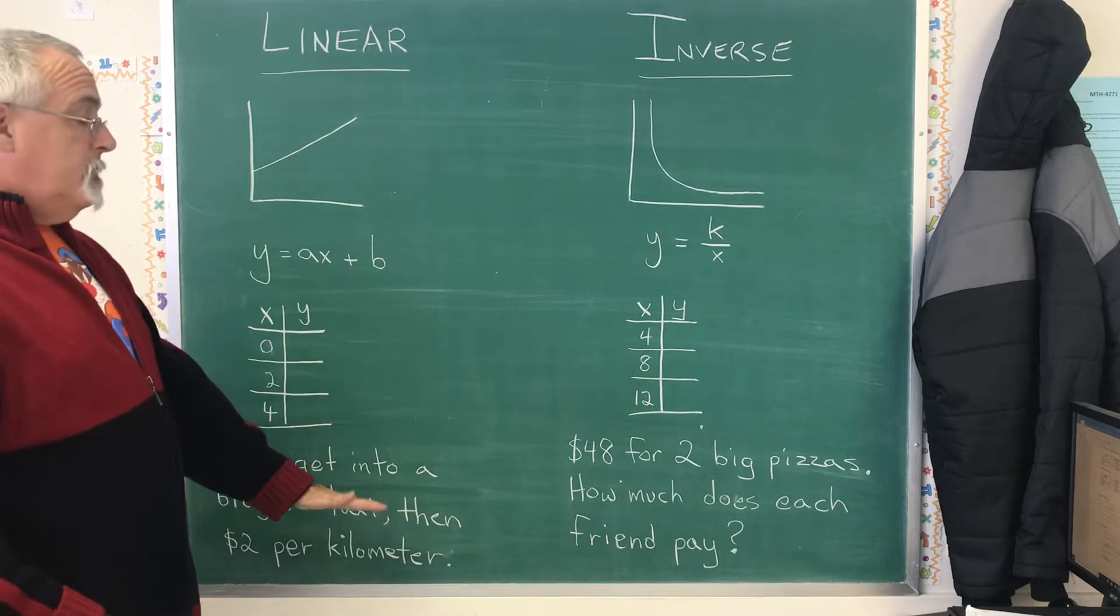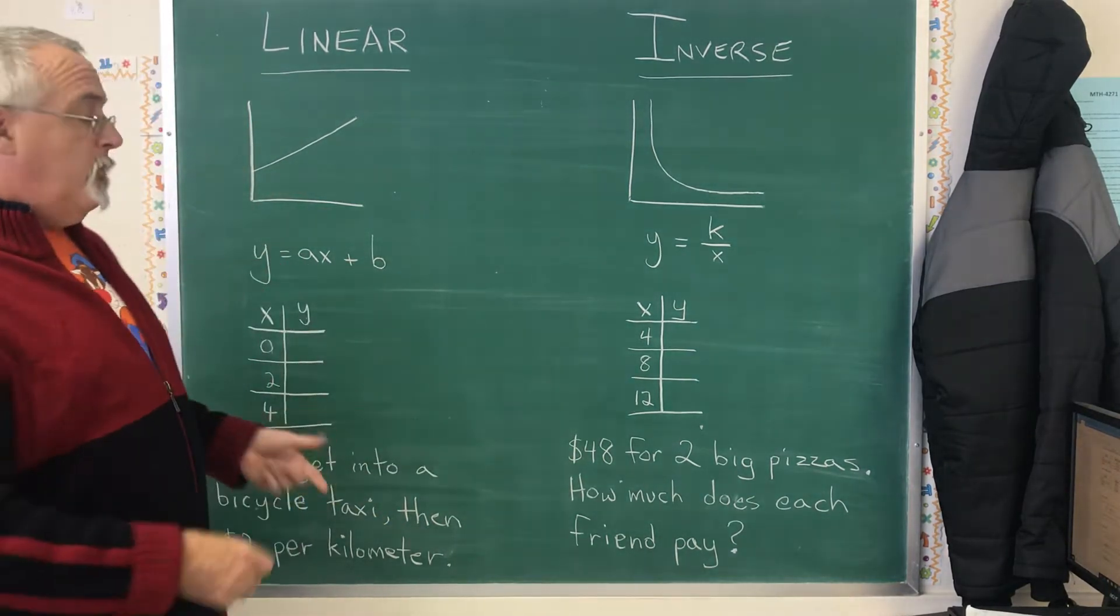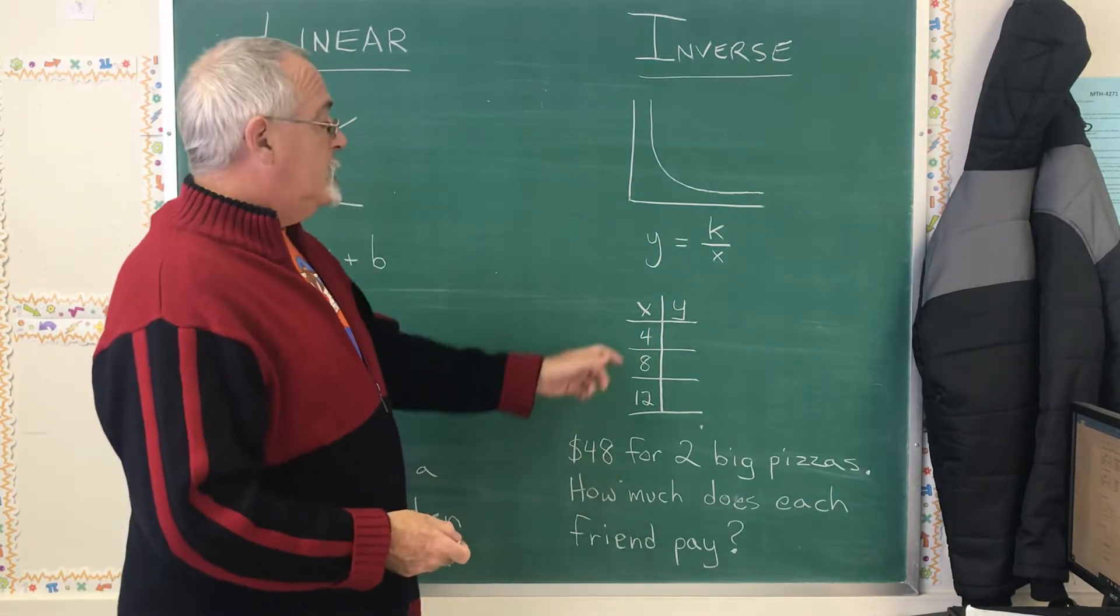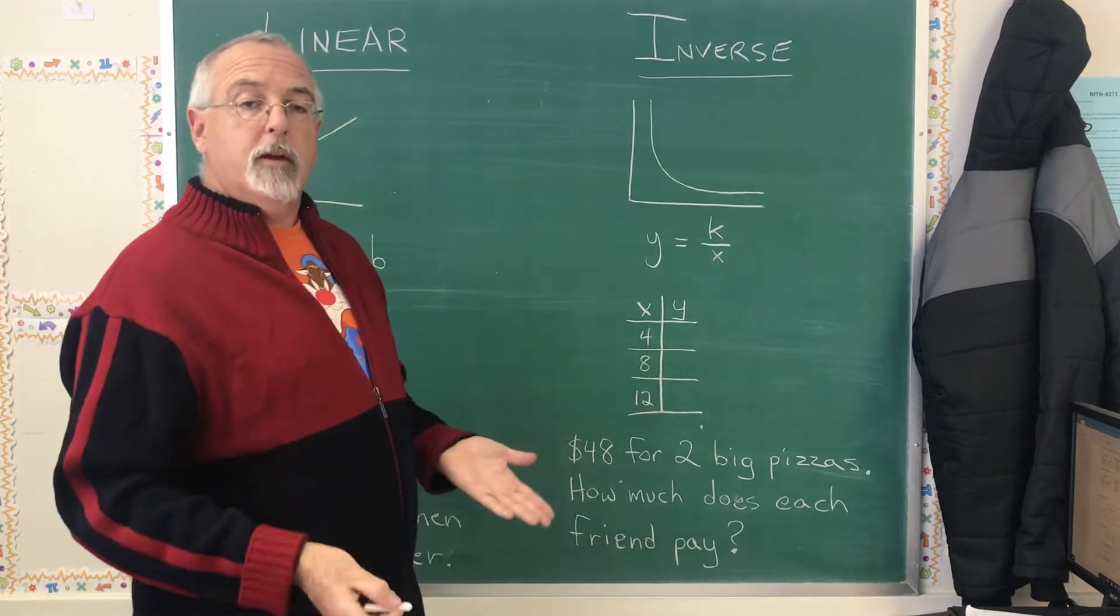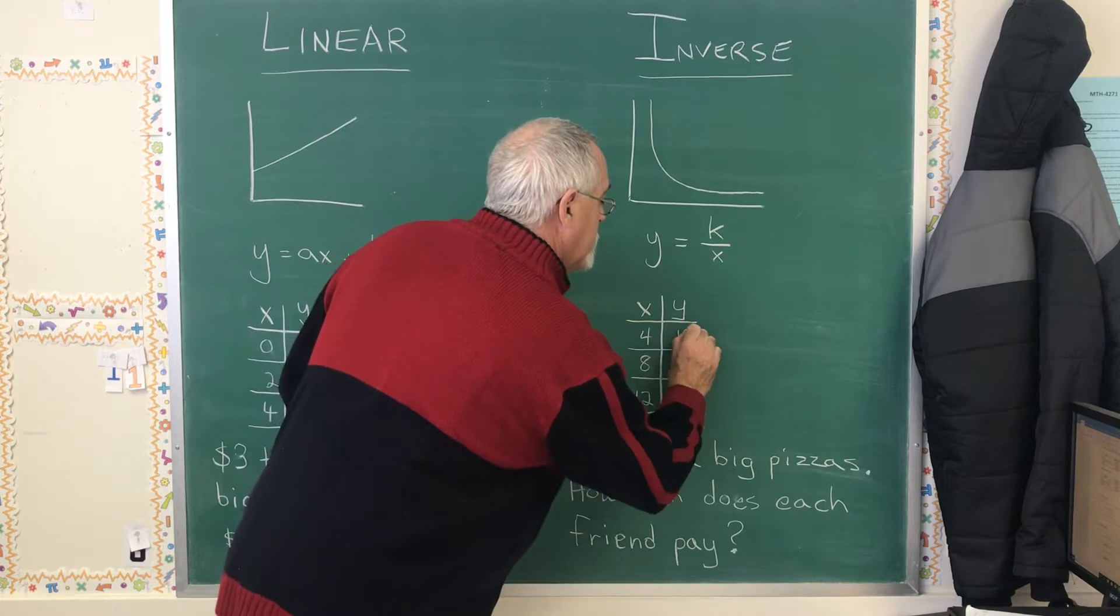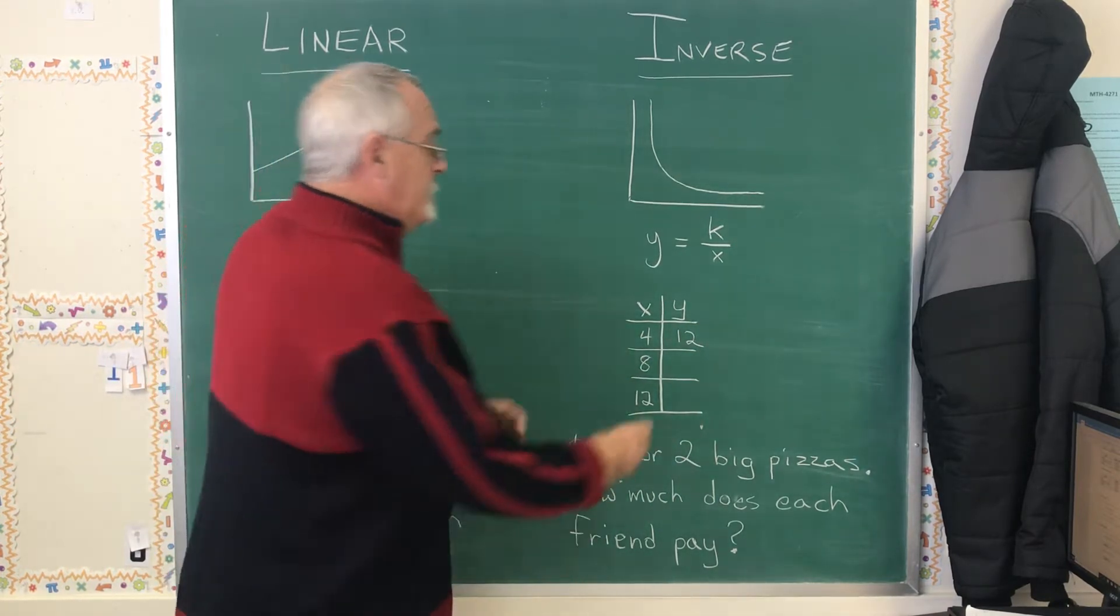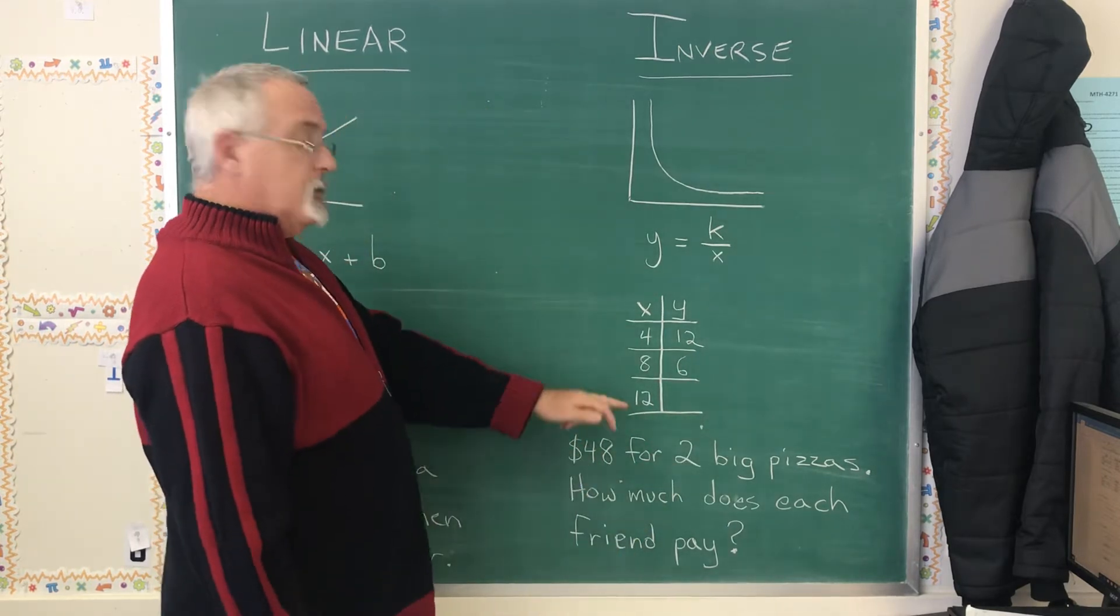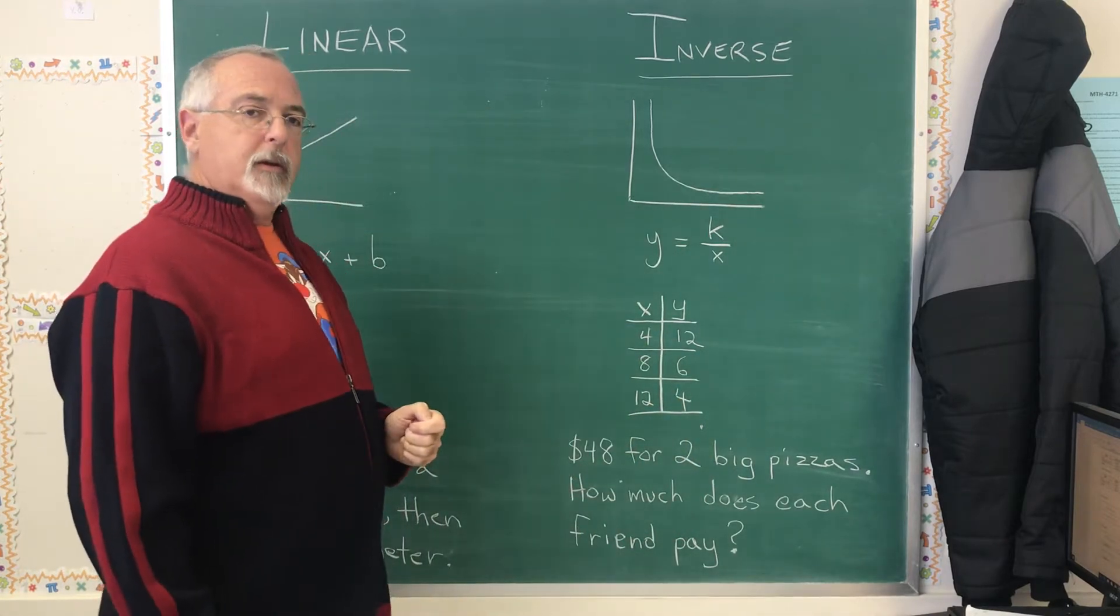But what we can do is we can use the information we're given to build a table of values and then we have a little bit more to work with. If I have $48 and I'm splitting it with 4 people, I'm doing $48 divided by 4 people and it's going to result in $12 per person. $48 divided by 8 people gives me $6 per person. $48 divided by 12 people gives me $4 per person and now I have a table of values to work with.